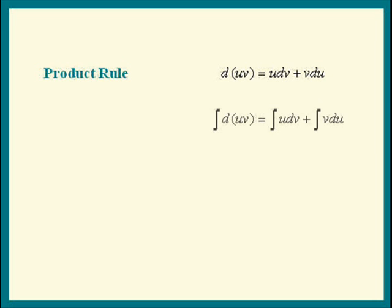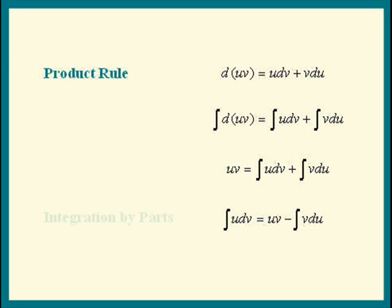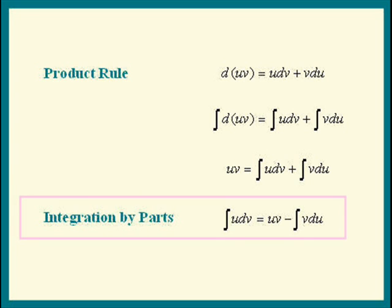Now integrate both sides. Integration and differentiation are reverse processes, so we just get uv on the left side. Now move the terms around, and we obtain the formula for integration by parts: the integral of u dv equals uv minus the integral of v du.